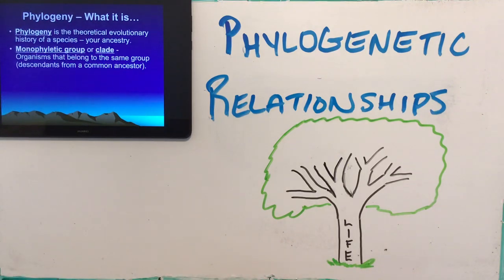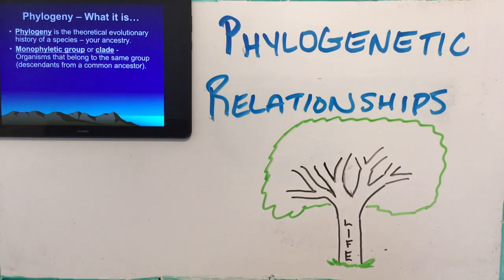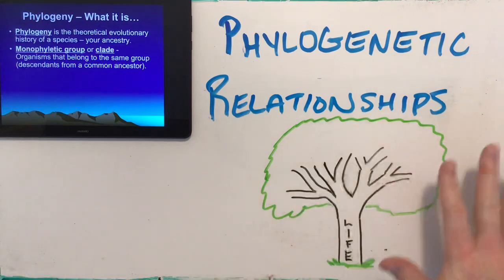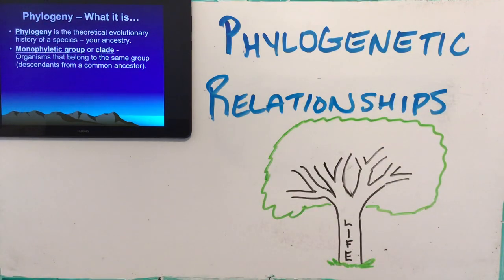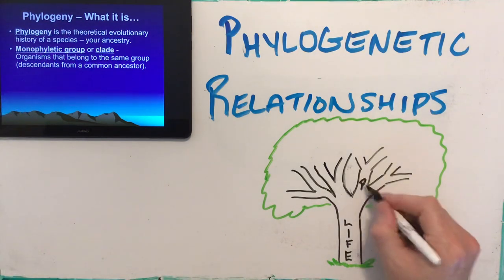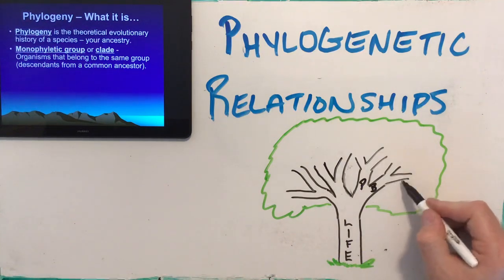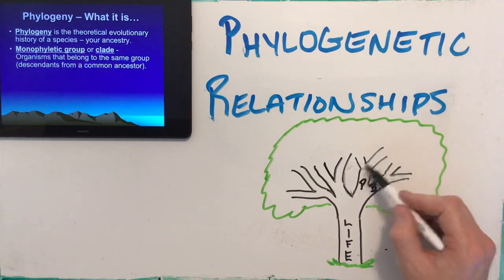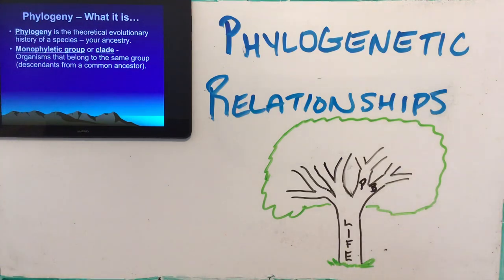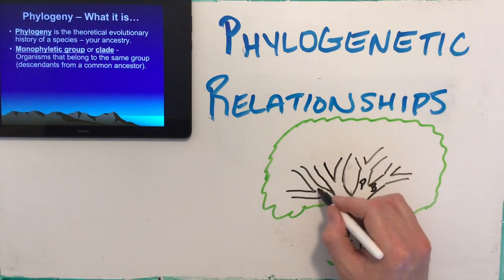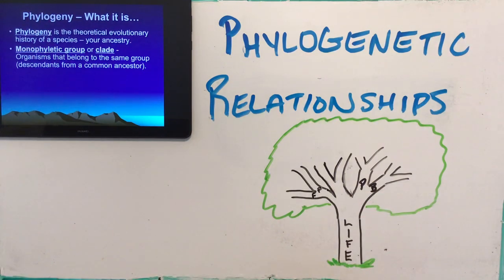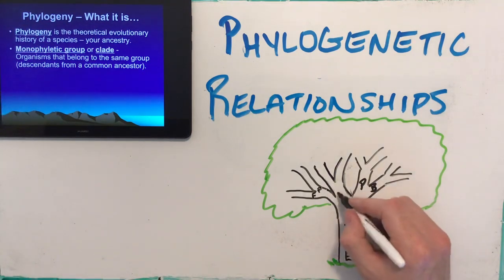What we look at are monophyletic groups, or clades. These are organisms that belong to the same group — descendants from the same common ancestor. Looking at our tree of life here, Darwin's tree included everything. On this tree of life we might have protists and bacteria, archaebacteria, eubacteria, plant-like and animal-like protists, plants and fungi, and then the animals.